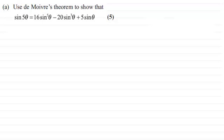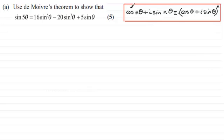Okay, welcome back if you had a go. To do this, what we need to know is De Moivre's theorem, which I've summarized here: cos(nθ) + i·sin(nθ) is identical to (cos θ + i·sin θ) all to the power n.